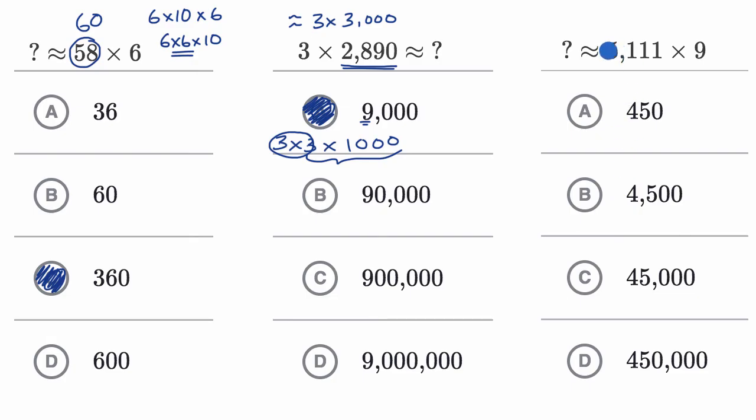All right, I would estimate this as 5,000 times 9. So 5,000 times 9 is the same thing as 5 times 1,000 times 9, which is the same as 5 times 9 times 1,000. 5 times 9 is 45, so it's going to be 45,000, which is this choice right over there.